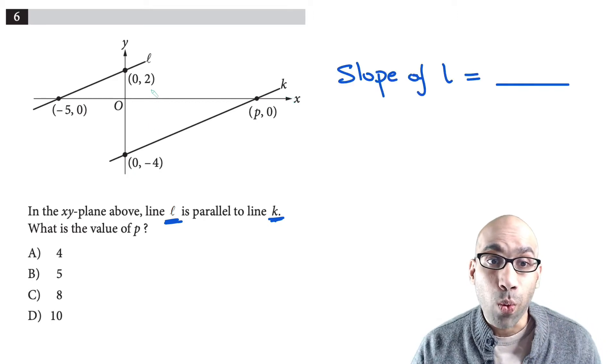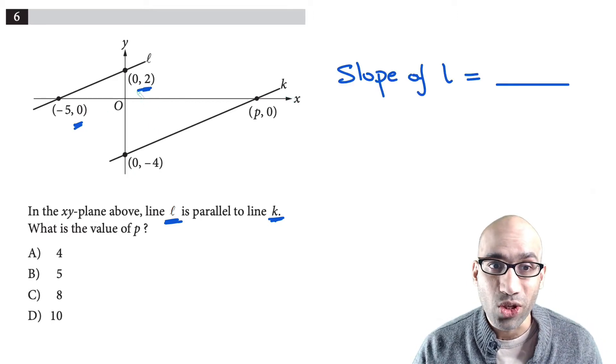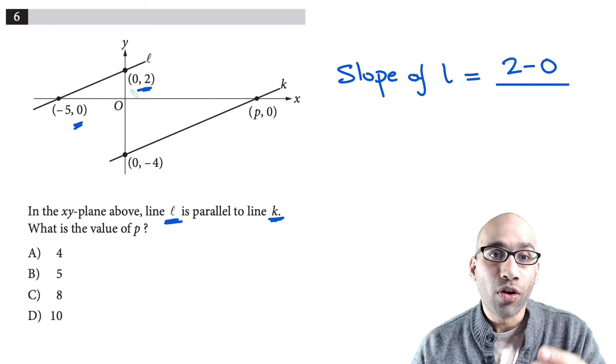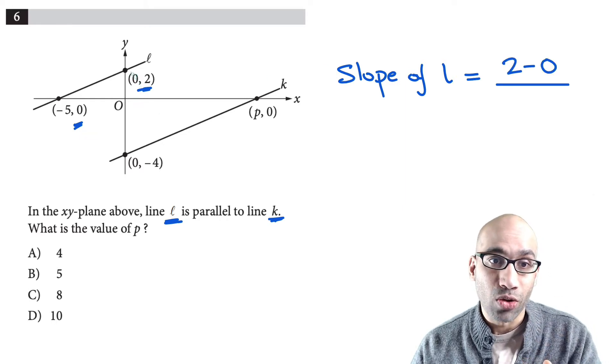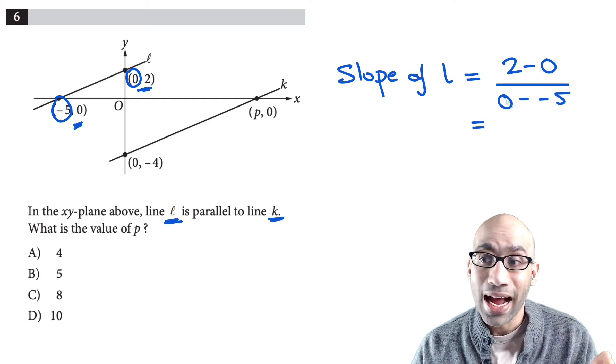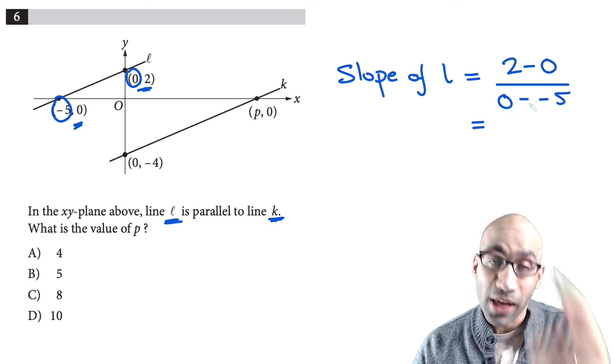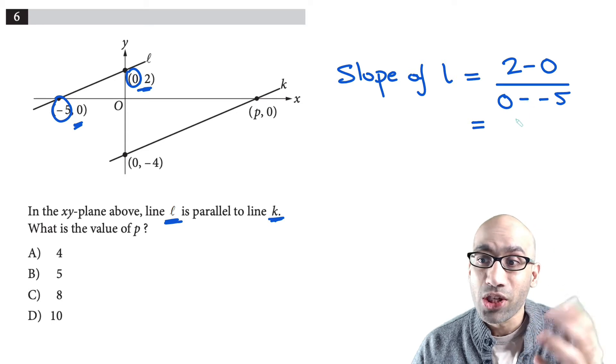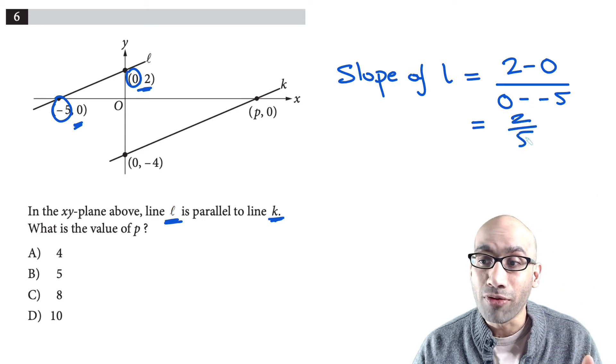The slope of line L is going to be y2 minus y1. So it's going to be 2 minus 0 over x2 minus x1, so 0 minus negative 5. Now the numerator is just 2 and the denominator is 0 plus 5, so that gives you 5, which gives you the slope of 2 over 5.